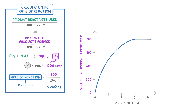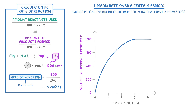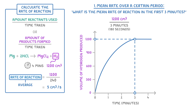With a graph like this, there are two main things that you could be asked to do. One is to calculate the mean rate of the reaction over a certain period, which is what we did earlier. For example, what is the mean rate of reaction in the first 3 minutes? For this, we just need to use our graph to find out how much hydrogen was produced in those first 3 minutes. So we find 3 minutes on the x-axis, and then draw up a dashed line to see where it intersects our curve. Then we draw another line from this point across to the y-axis, to find that 1200 cm³ of hydrogen was produced. So we just do 1200 cm³ divided by 3 minutes, or 180 seconds, to get an average rate of 6.67 cm³ per second.